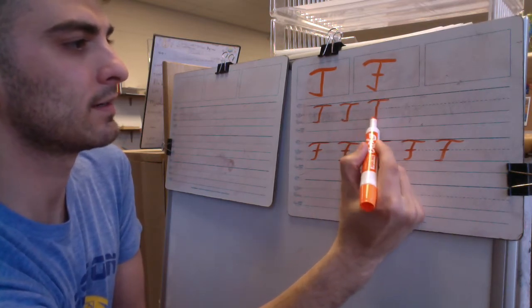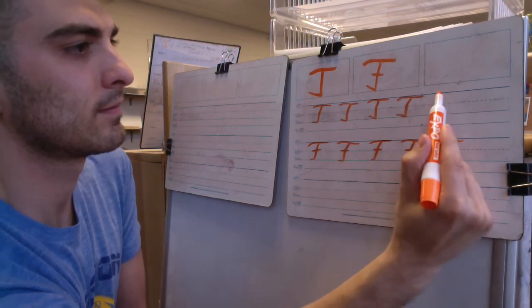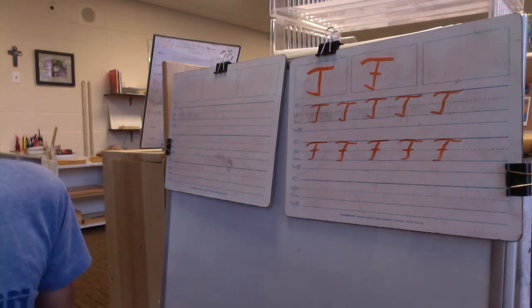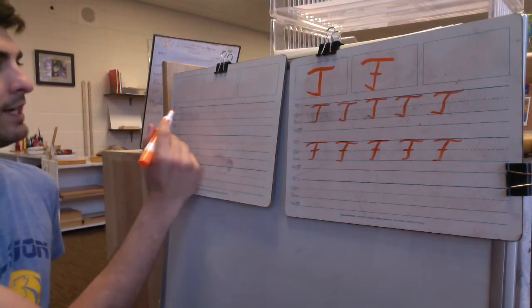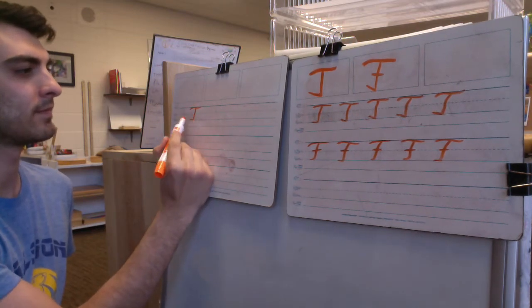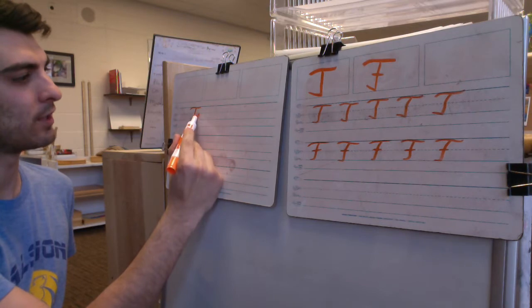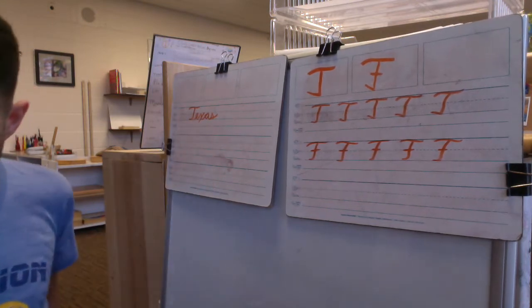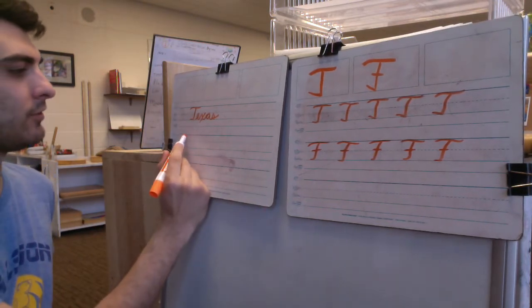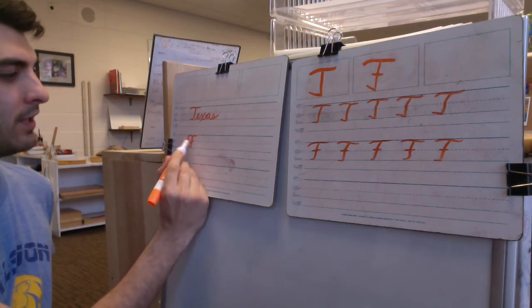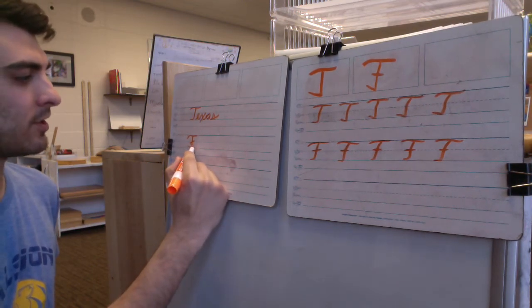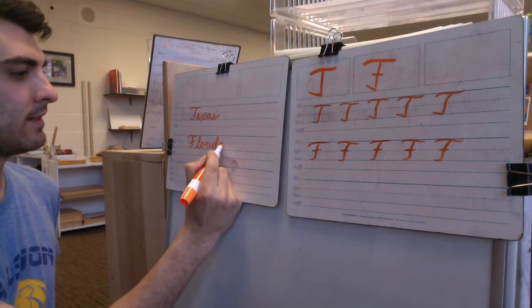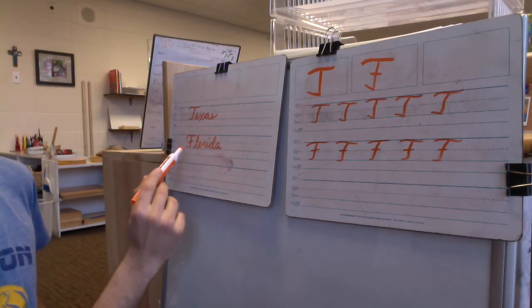There we go, more T-like. All right, so for the T I'm going to write Texas. Since it ends over here, I'll finish the word E-X-A-S with these two not connecting. And I'll do Florida. Similarly, since it ends over here they're not going to connect, so I'll start my lowercase L-O-R-I-D-A. Texas and Florida.